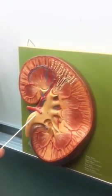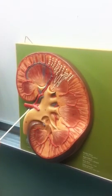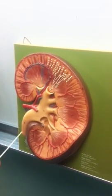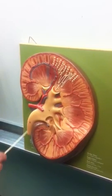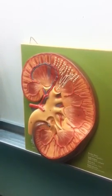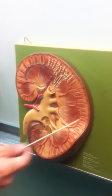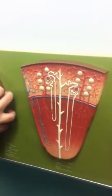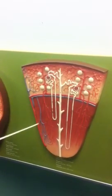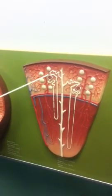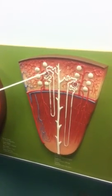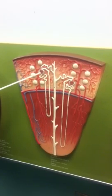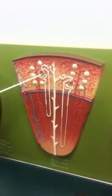Going back to the kidney, this would be the first portion of the ureter. This part of the model is used to explain the nephron, which are the anatomical and functional units of the kidneys. This is where urine is actually formed. The nephron has several different portions.